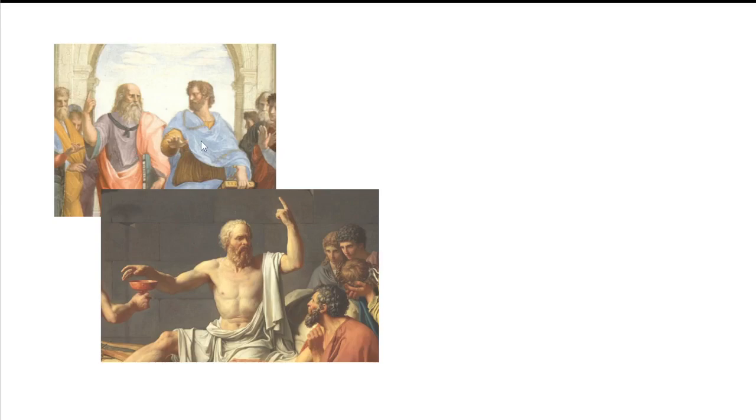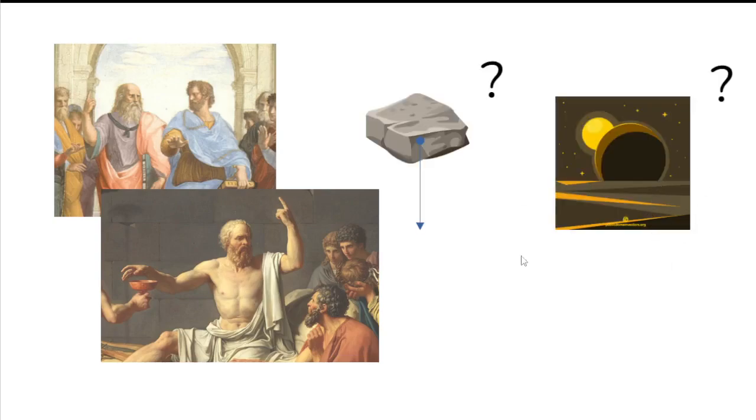Socrates and Plato were first to point that to truly explain natural phenomena is to explain why they look the way they do. Why it's better for planets to move in regular patterns. Why it's better for stones to fall downwards in straight lines. Regularity was explained by purposeful order, which was adopted by Aristotle too.